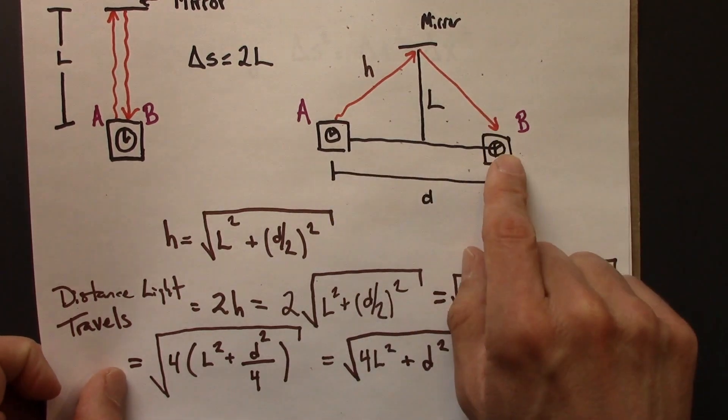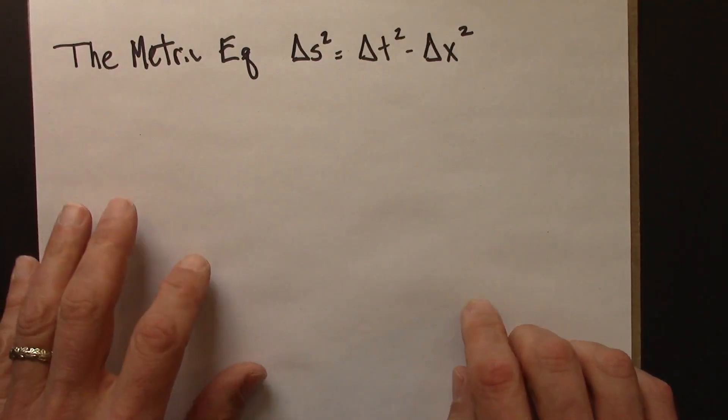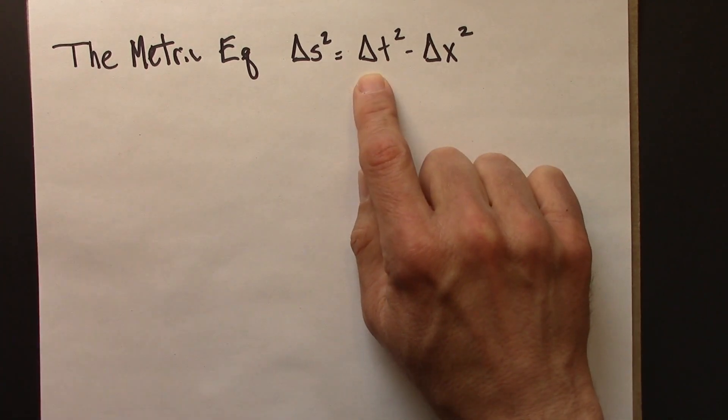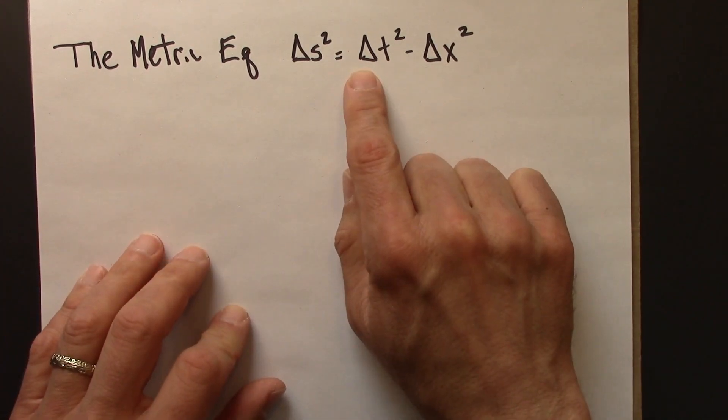So this is a completely general derivation that holds for delta x, delta t pairs in any reference frame, any values for delta x and delta t.